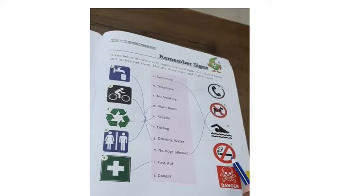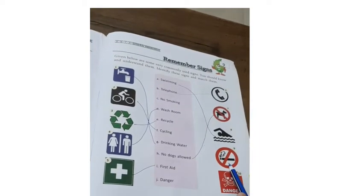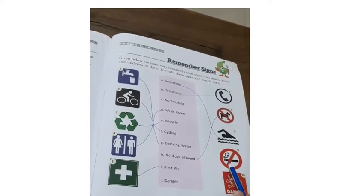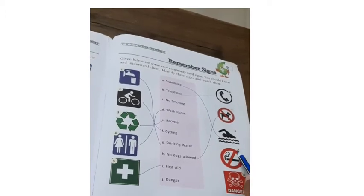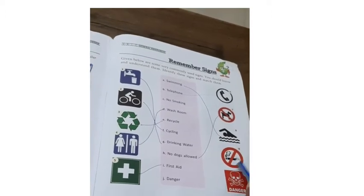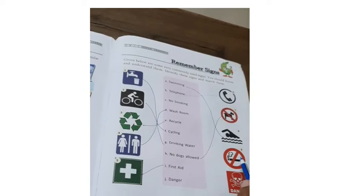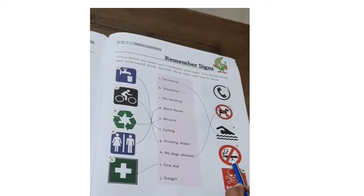Now number nine — this symbol shows a person with a circle and cross around it, which means no smoking. So this symbol is no smoking.